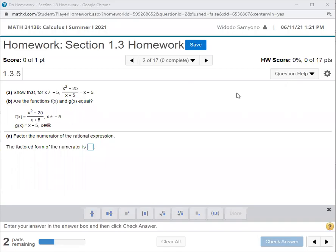Okay, so for this one, question number A: factor the numerator of the rational expression. The factored form of the numerator is - so here you have that x² minus 25 is the same as (x minus 5) times